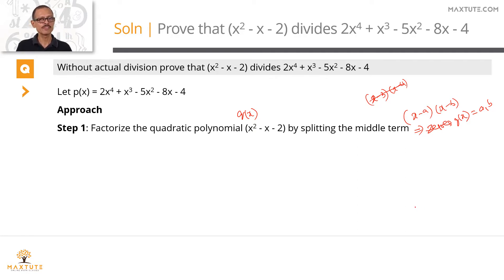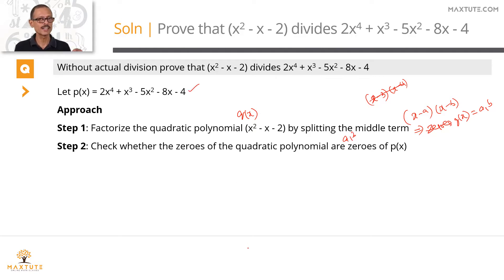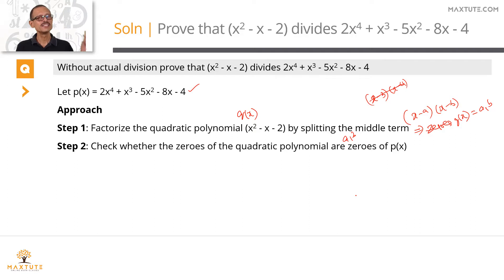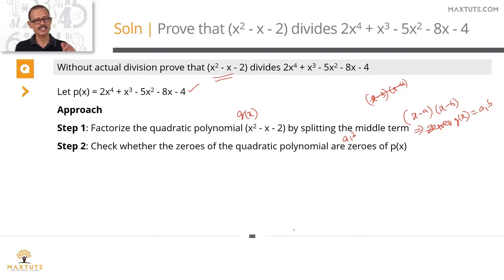Step 2: we'll check whether a and b are also zeros of the polynomial p of x. So steps 1 and 2 are: establish the zeros of the quadratic expression, then verify those are also zeros of the polynomial.